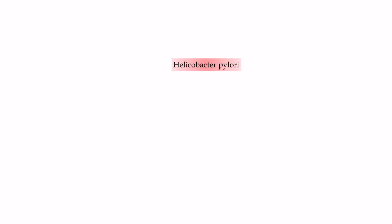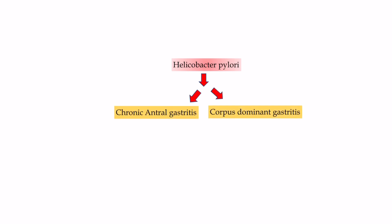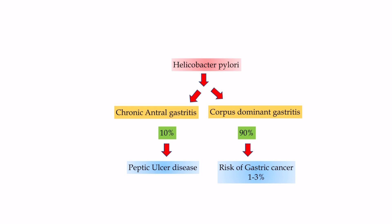H. pylori causes two types of gastritis. Chronic antral gastritis with sparing of the proximal stomach occurs in about 10% of infected patients, and this predisposes to peptic ulcer disease. The other 90% of Helicobacter-infected patients develop chronic inflammation of the proximal stomach — corpus-dominant gastritis — which can lead to gastric cancer in about 1% to 3% of this group.